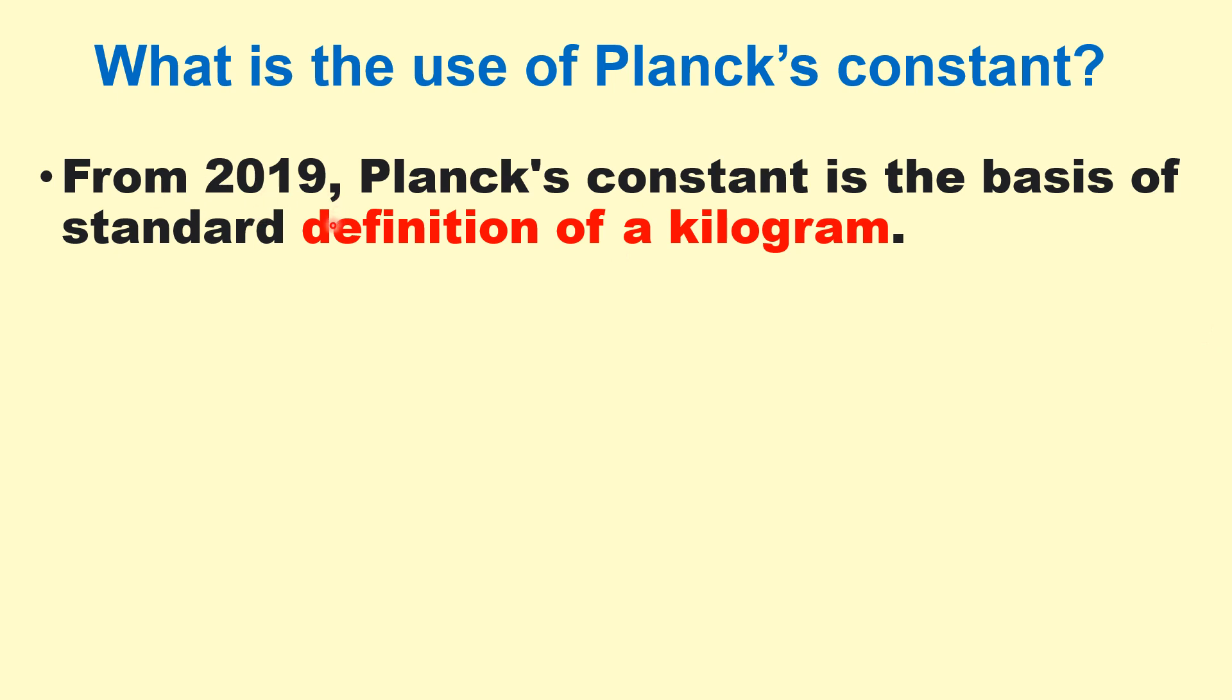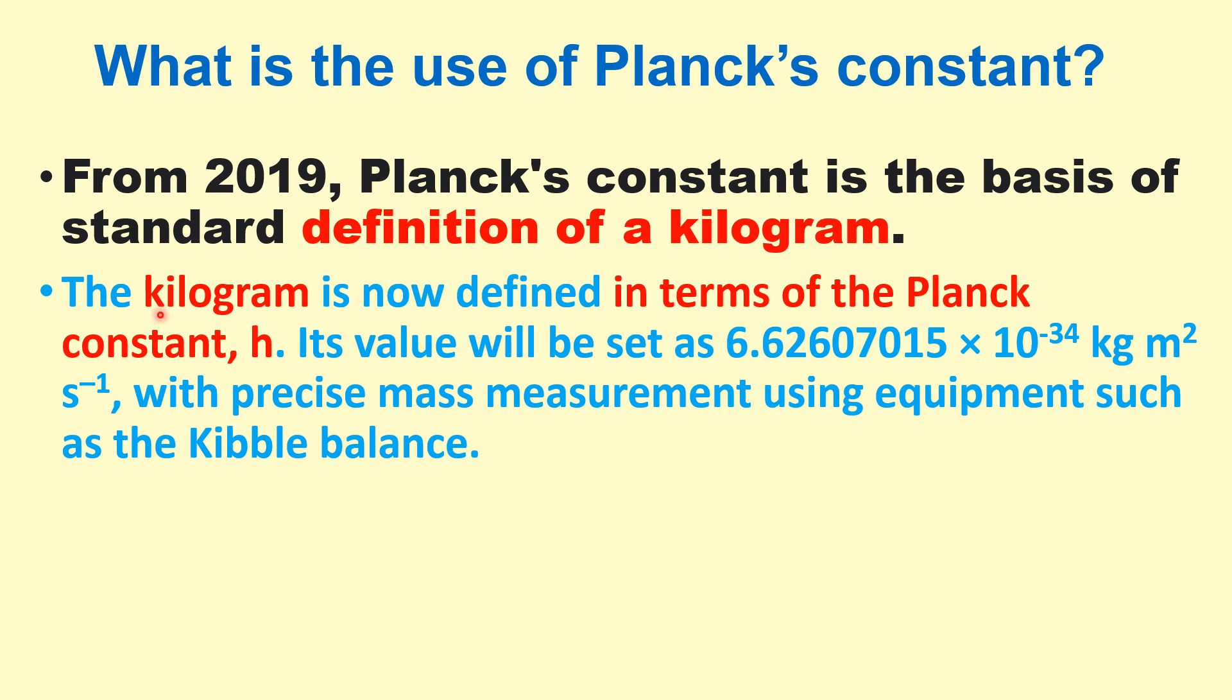From 2019, Planck's constant is the basis of standard definition of a kilogram. Initially it was some platinum iridium alloy which was a standard value of kilogram, but now it is based on the Planck's constant, the new definition of a kilogram. The kilogram is now defined in terms of the Planck's constant H. Its value will be set as 6.62607015 into 10 power minus 34 kilogram meters square per second.